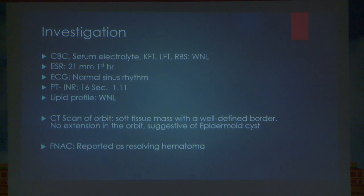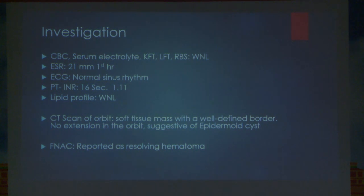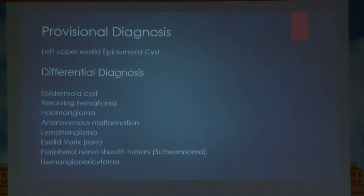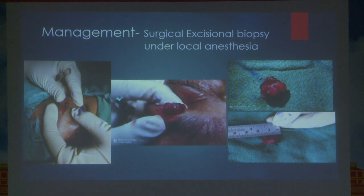Routine investigations were within normal limits. CT scan of the orbit revealed a soft tissue mass with a well-defined border and no extension into the orbit, suggestive of epidermoid. The FNAC report suggested a resolving hematoma. Based on the CT report the provisional diagnosis was made as epidermoid. However, since the swelling was soft in consistency, differentials including epidermoid, resolving hematoma, hemangioma, arteriovenous malformation, lymphangioma and varix were kept in mind. Management was surgical excisional biopsy under local anesthesia.